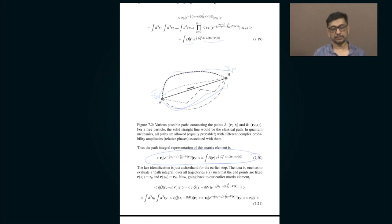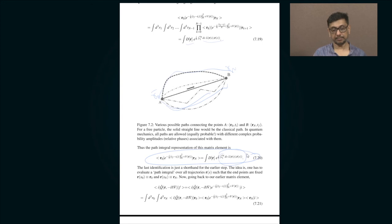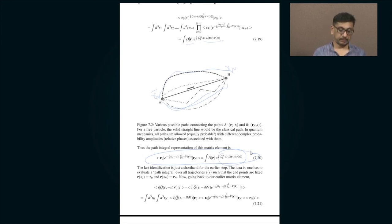To summarize: the matrix element of the time evolution operator e^(−iHt/ℏ) — where H = P²/2m + V(R) — between initial position r_0 and final position r_N is a path integral of e^(iS/ℏ) over all possible paths connecting r_0 and r_N, where S is the action, defined as the integral of the Lagrangian. The parameter s can be thought of as time, with s = t_i giving r_0 and s = t_f giving r_N.